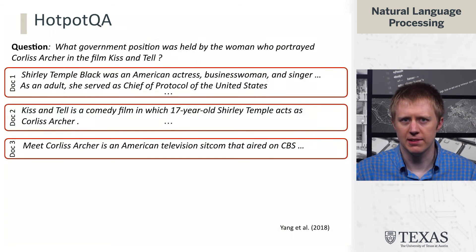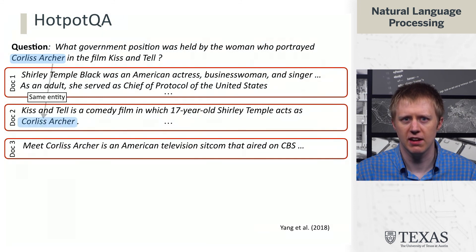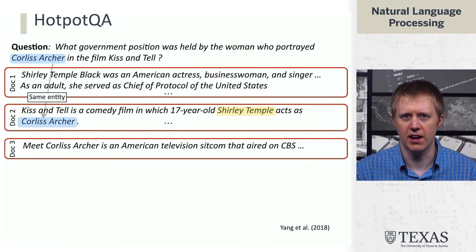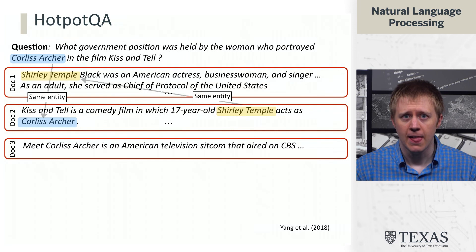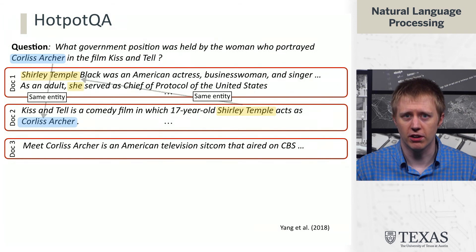If we have a bunch of documents, we first need to figure out who portrayed Corliss Archer in the film Kiss and Tell. We would ideally jump from the question into the relevant part of a document and recognize that the answer to this sub-question is Shirley Temple.